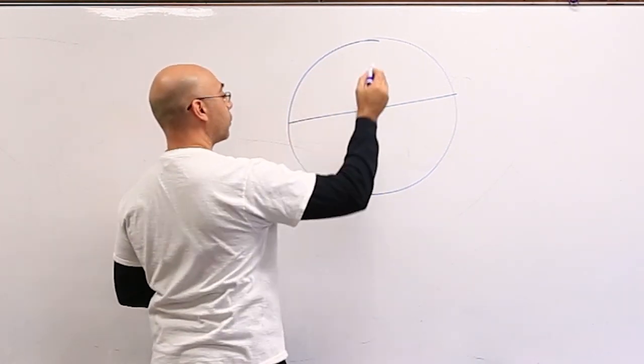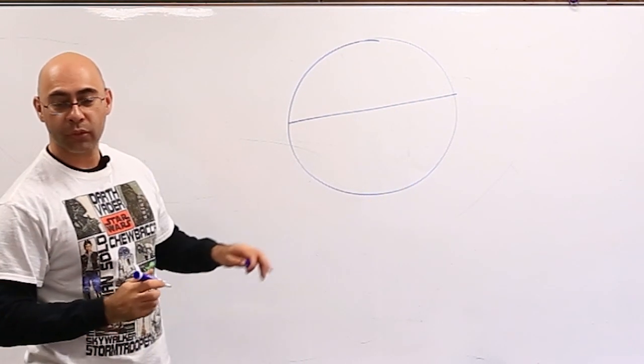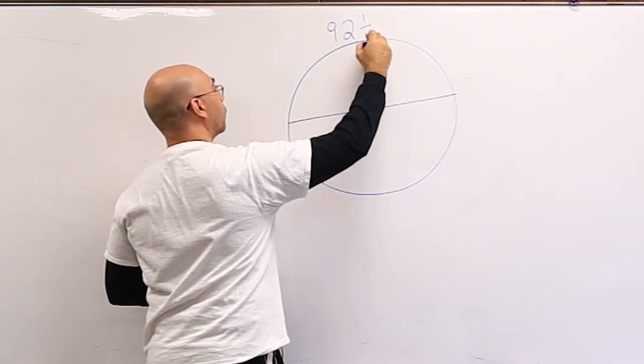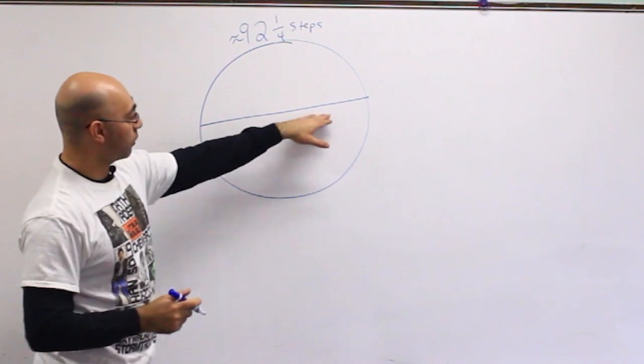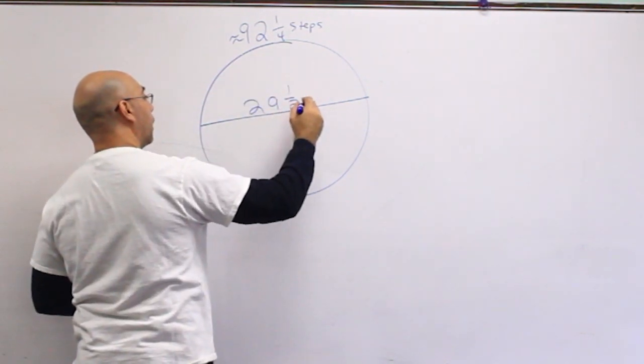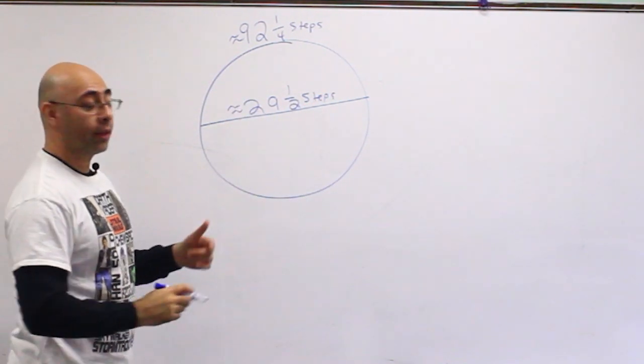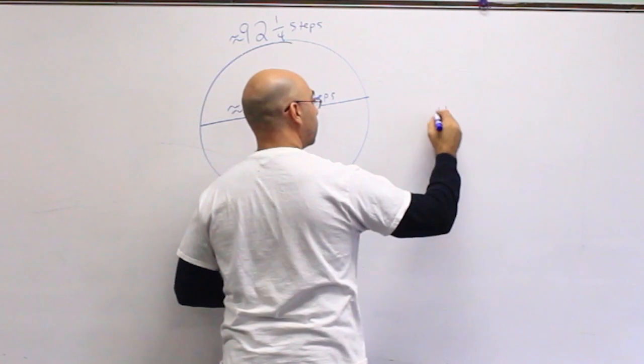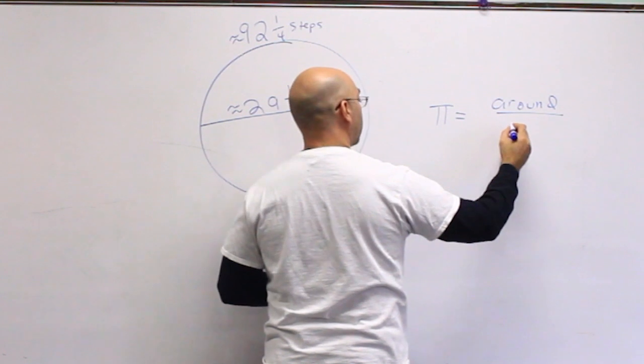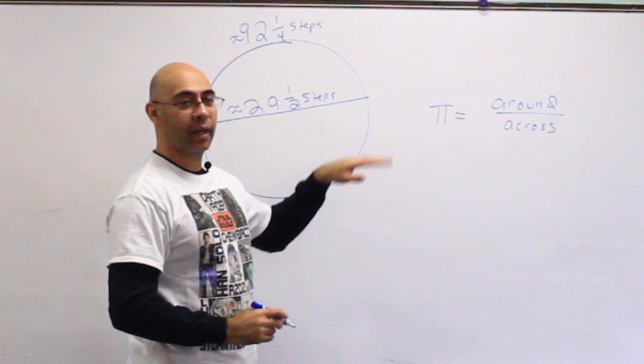When I went around the circle, it was about ninety-two and one-quarter steps. When I went across, I took twenty-nine and a half steps. So to figure out pi, it's the distance around divided by the distance across, or circumference divided by diameter.